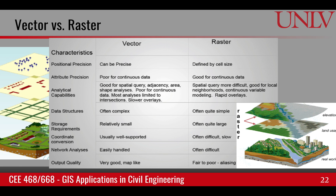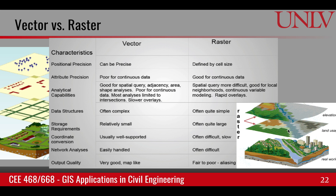But if we look at attribute precision, the attribute precision of vector is not as good as raster. Why is that? Raster data, because of its form as a matrix, can represent continuous data. For example, with temperature, we can create a grid where variation in values is represented by color shades, and you can precisely see how temperature varies from point to point. Whereas using polygons for continuous data would be very difficult — there would be too many polygons. So attribute precision is not very good for continuous data in vector, but it is very good using raster.